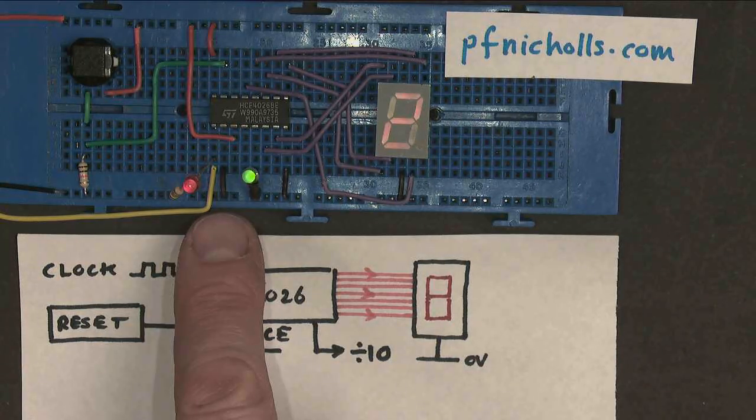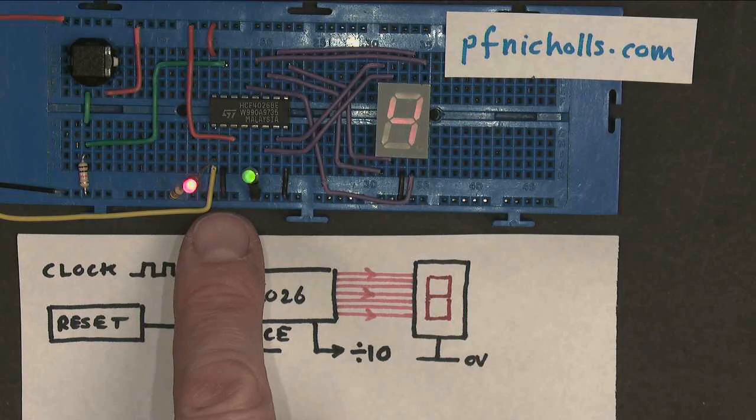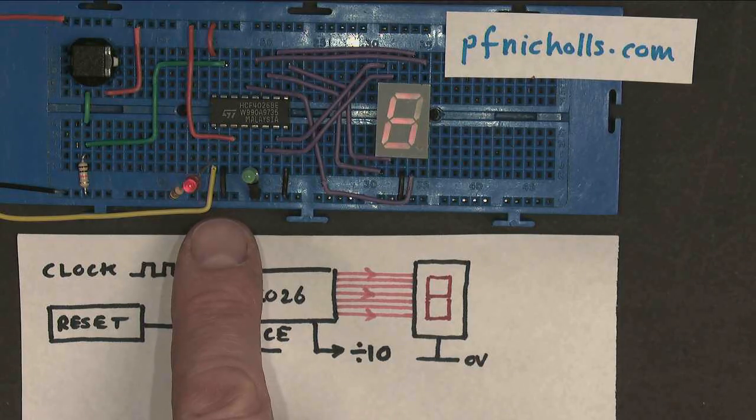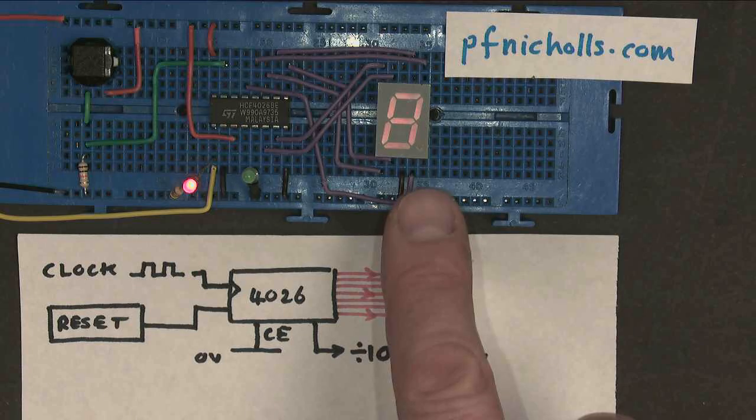So pin 2 is very useful for stopping the counter counting any more clock pulses, but not actually resetting it, so it can hold a value on the display.